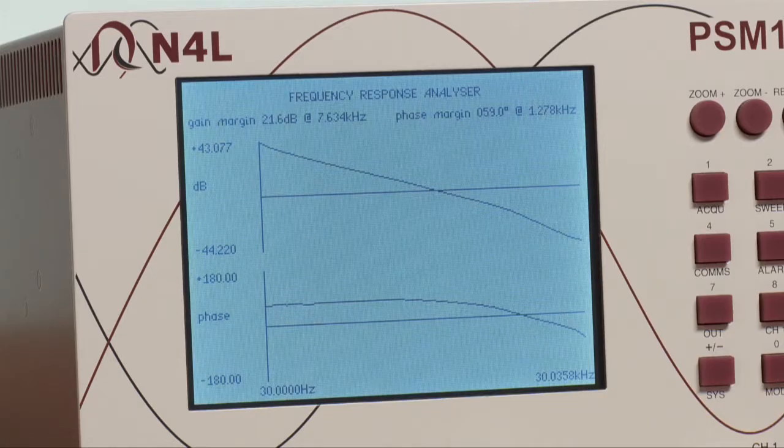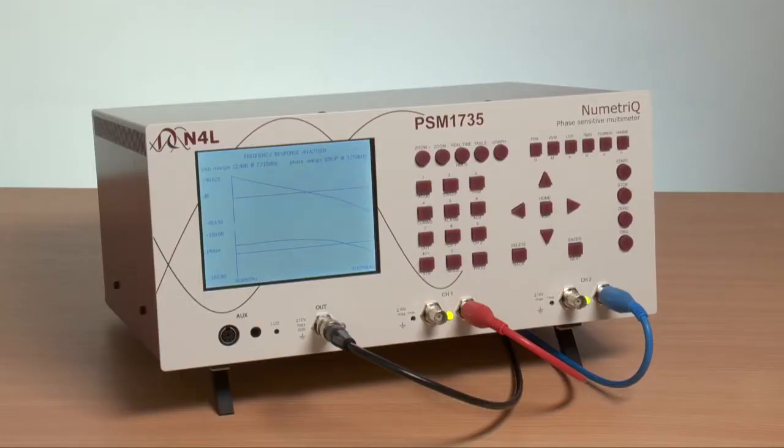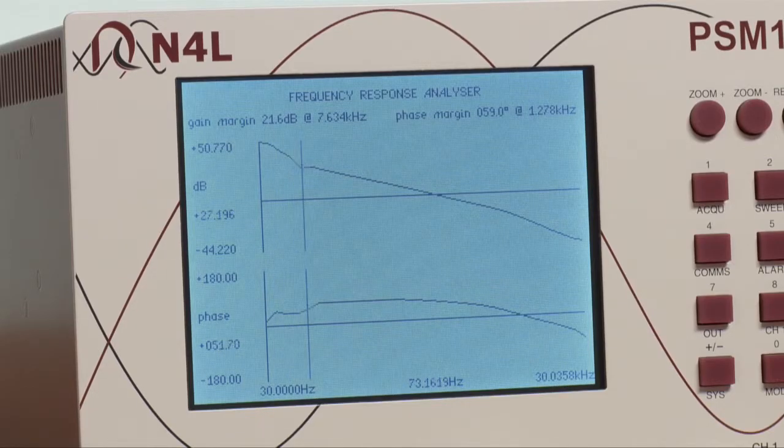If we now change the load, you can see by a re-sweep with a different load that the plot will change quite considerably, which illustrates the significance of load change to control loop analysis.